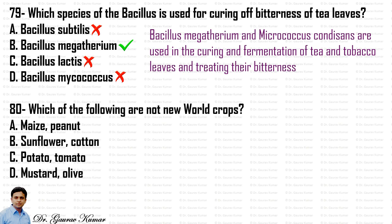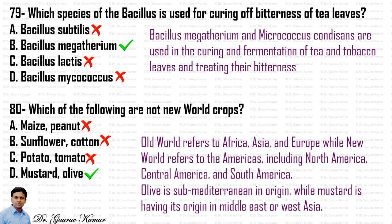Which of the following are not the new world crops? The answer is mustard and olive. Old world refers to Africa, Asia, and Europe, while new world refers to the Americas including North America, Central America and South America. Olive is sub-Mediterranean in origin, while mustard has its origin in the Middle East or West Asia. You have to remember some very common old world and new world crops from any economic botany book.